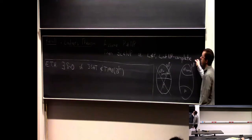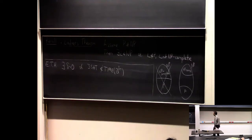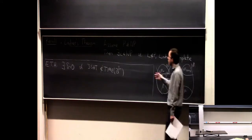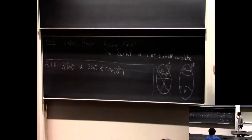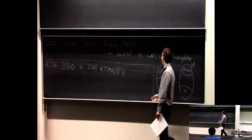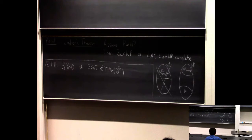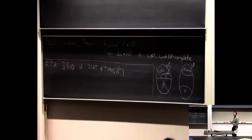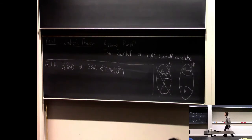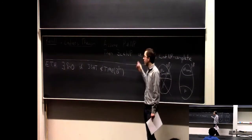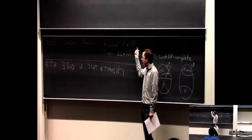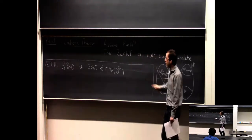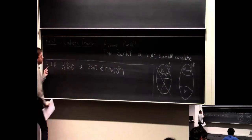So, Ladner's theorem. We're trying to find an interesting language L that is in NP, not in P, but also not as hard as every language in NP — some kind of intermediate level problem. Instead of assuming P is not equal to NP, we're going to make a stronger assumption called the exponential time hypothesis (ETH). This is a stronger conjecture than P does not equal NP.